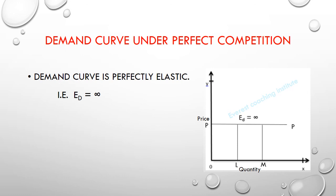Nobody will be ready to buy at a higher price because everyone knows the prevailing market rate. So now, looking at this diagram — the demand curve under perfect competition has quantity on the X-axis and price on the Y-axis. The price line PP is parallel to the X-axis (quantity axis). This means at this price, the seller can sell any number of units — more or less. The demand curve is perfectly elastic; the elasticity of demand (Ed) is infinity.